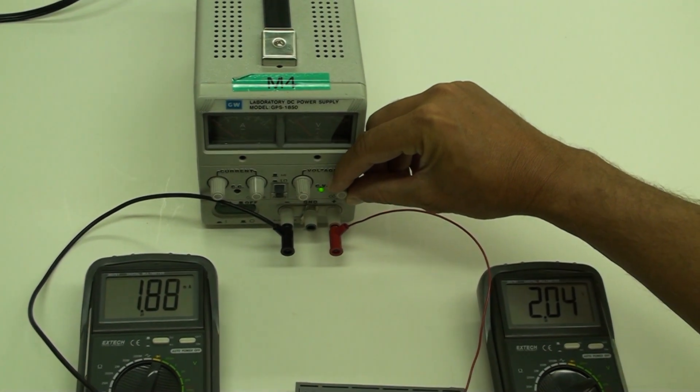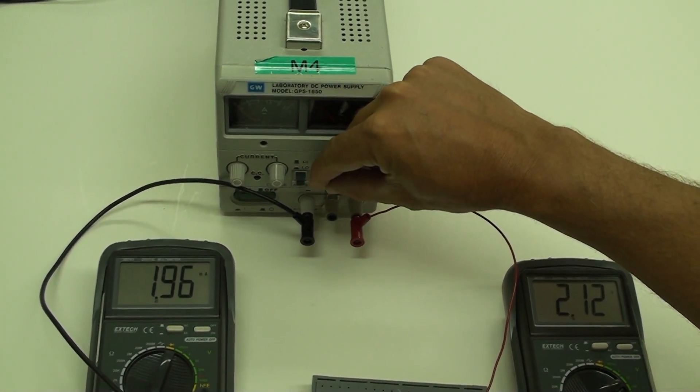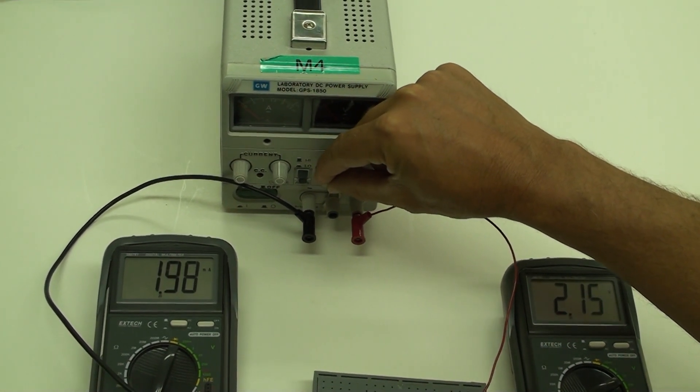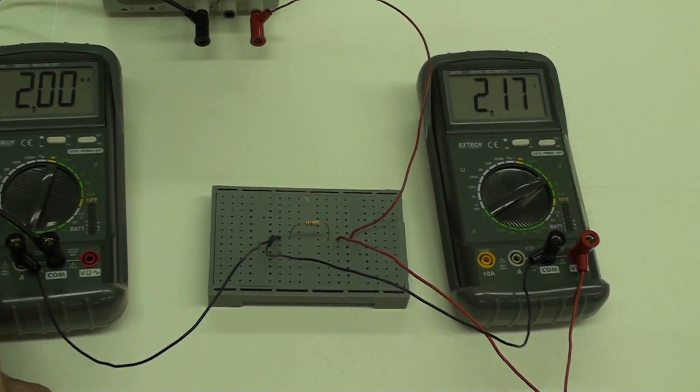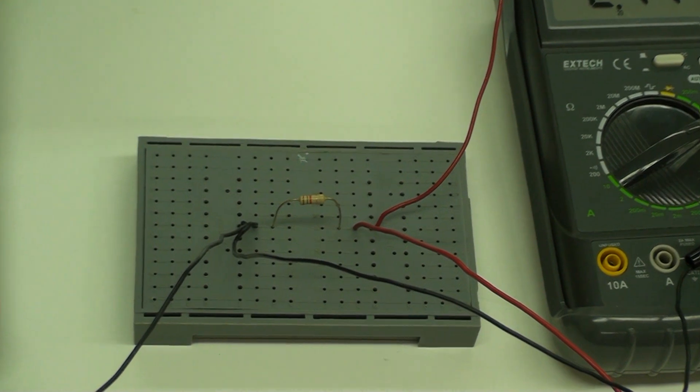Ease up the voltage until the current reads 2 milliamps. Take readings of both voltage and current. Repeat the measurements of voltage for currents of 4, 6, 8 and 10 milliamps.